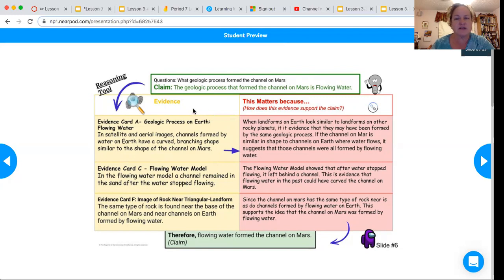The evidence is that first a piece of evidence that the geologic process on Earth, which is flowing water, those are images that we saw. So in satellite and aerial images, channels formed by water on Earth have a curved branching shape similar to the shape of the channel on Mars.